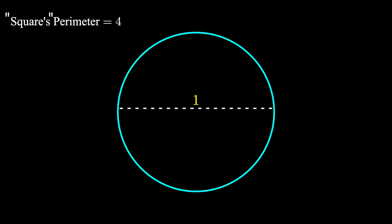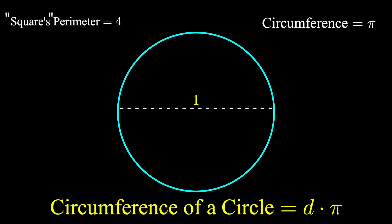What is the circumference of a circle? We know it's diameter times pi. In this case, 1 times pi is pi. That's the circumference of this circle.